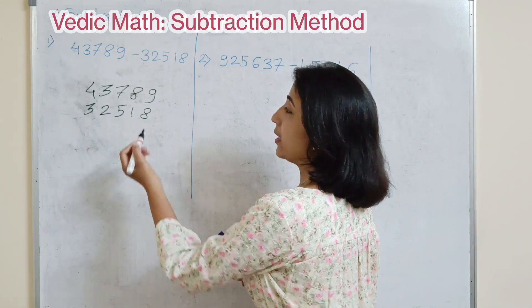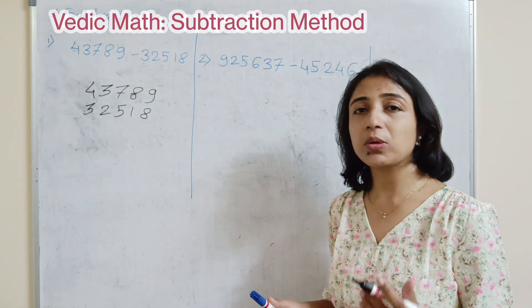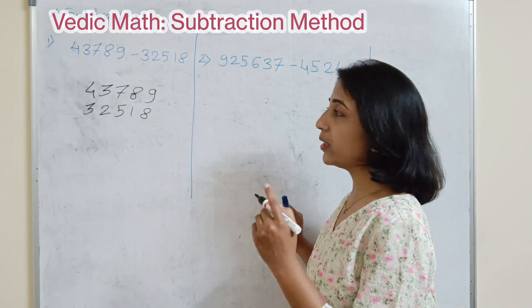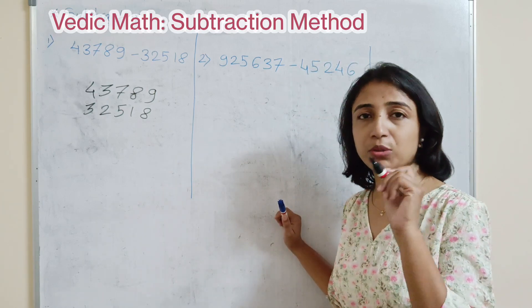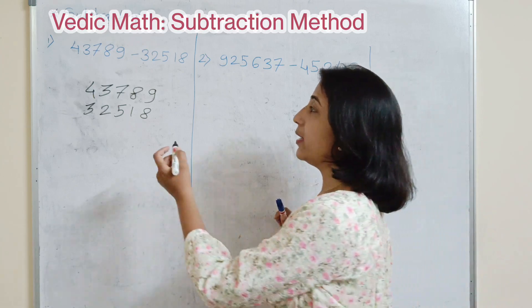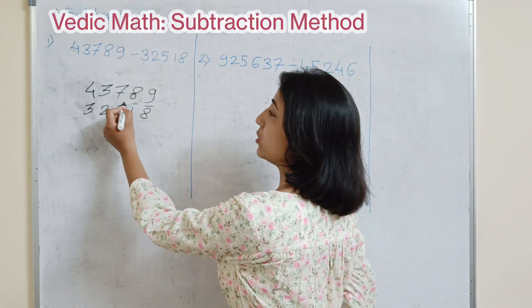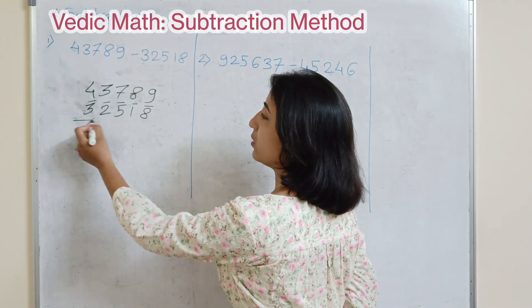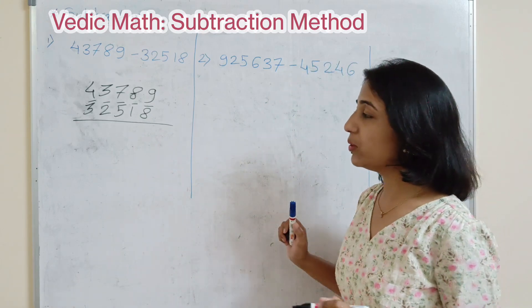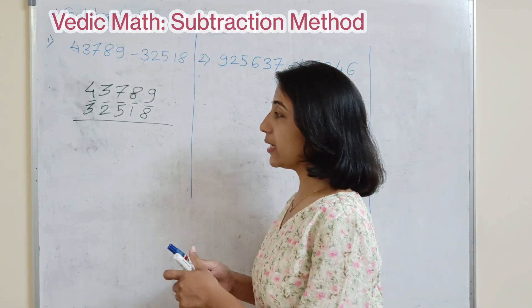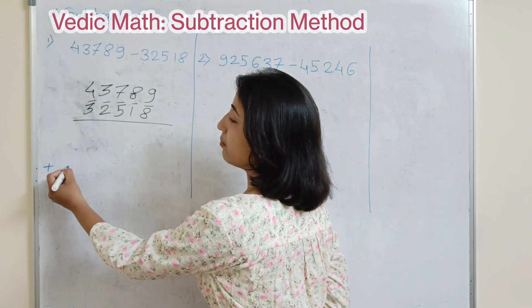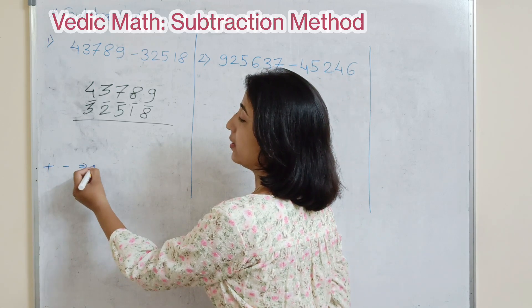When subtracting, consider that each digit of the number being subtracted is negative. Since it is not practical to write minus signs in front of every digit, we take the help of a bar. The upper bar on a number represents that the number is negative. We know that in mathematics, if the number is plus-minus, you have to take the subtraction.